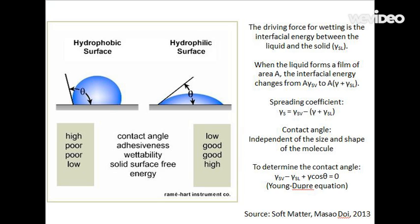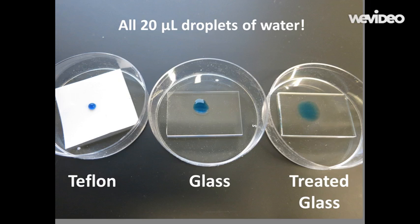The spreading coefficient is the difference between these two energy changes. The contact angle, based on this equation, is independent of size and shape of the molecule, as well as the volume of the droplet. To determine the contact angle, we subtract the solid liquid interfacial energy from the solid vapor interfacial energy and add in this energy contribution from the angle. This is also called the Young-Dupree equation.